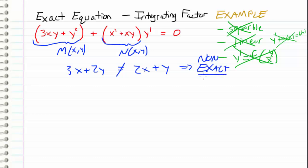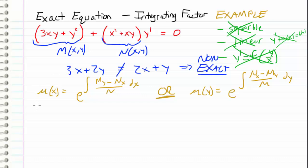So we need to do something to turn it into an exact equation so that we can use the methods of exact equations to solve it. As we learned in the previous videos, we're going to use our good friend the integrating factor. We have two possibilities: we can choose our integrating factor mu to be a function of x, or we can choose it to be a function of y, and we'll make this decision based on which integral is easiest to evaluate.